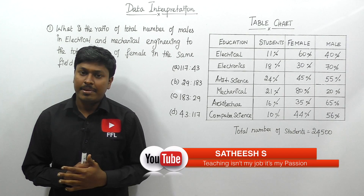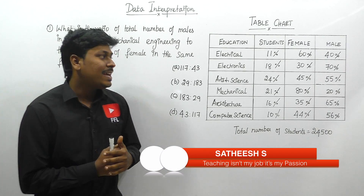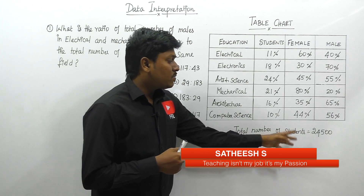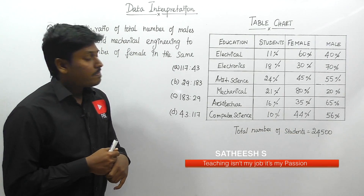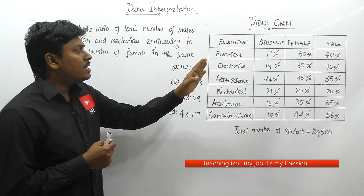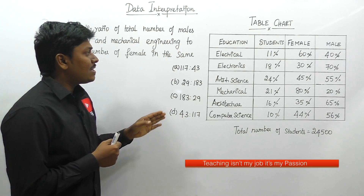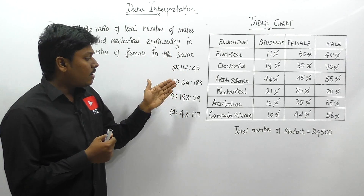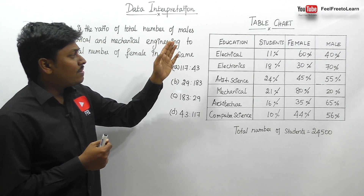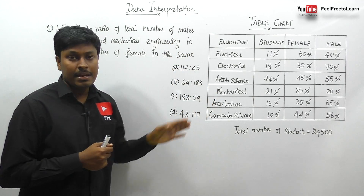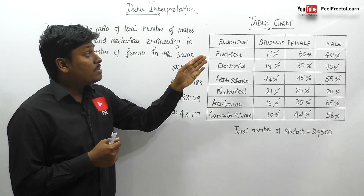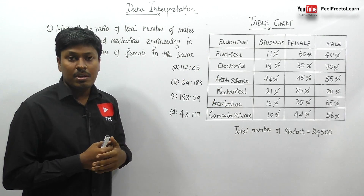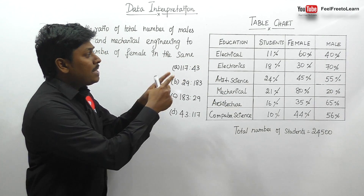Let me move on to the data interpretation question. Initially they have given a table chart. The total number of students is 24,500 and there are four columns: the first column is education — that is electrical, electronics, arts and science, mechanical, architecture, and computer science. The second column shows students as percentages, the third column is female (all values in percentage), and the fourth column is male.